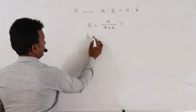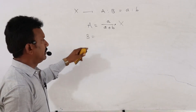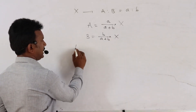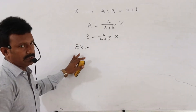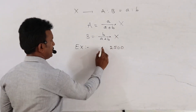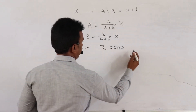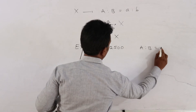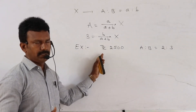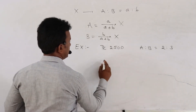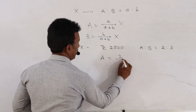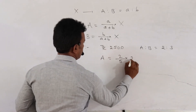And in the same way, the share of B is b divided by (a plus b) into X. Let us write one example for this shortcut. An amount of 2500 rupees is divided between two persons A and B in the ratio 2 is to 3. The amount received by A is 2 by (2 plus 3), that is 2 by 5, into 2500.